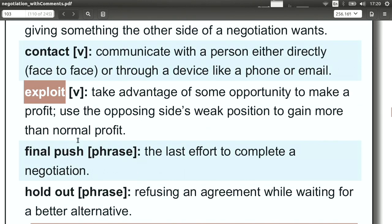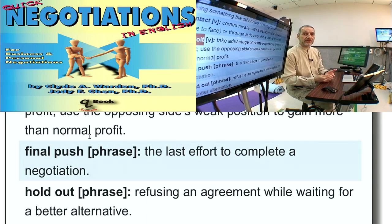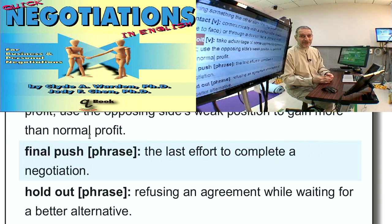Exploit means to take advantage of. We often think of this as a negative word, but in business or economics, it's not really a negative word — it just means to use some kind of resource to get something, to get some kind of benefit. In negotiation, exploiting the other side's weakness or something you know about the other side means that you take advantage of that. It's not necessarily a bad thing.